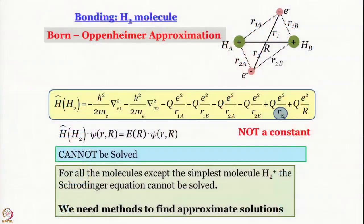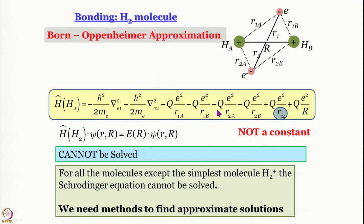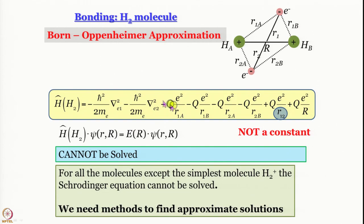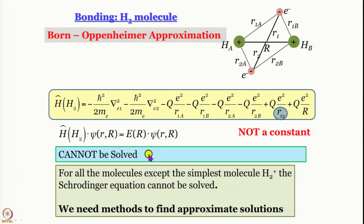Just to remind you, for the H2 molecule under the Born-Oppenheimer approximation, we have already written that the Hamiltonian expression simplifies somewhat because capital R is a constant. For every value of R we have to work out this Schrödinger equation using this Hamiltonian, and the complicating factor is that r12 is not a constant. So the moment you have two electrons, it cannot be solved exactly.